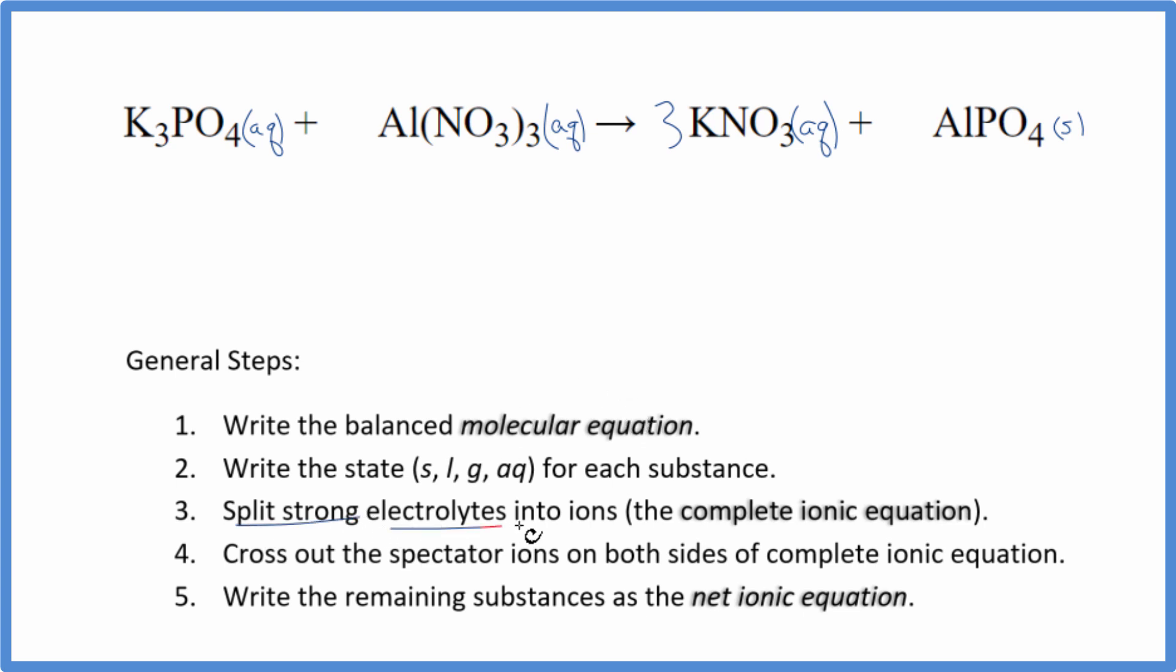Now we can split the strong electrolytes into their ions. And this will give us the complete ionic equation. On the periodic table, potassium is in group one. So that's going to be one plus. And then phosphate, the whole ion, is three minus. Good one to remember. Three potassium ions. And I won't write the states right now. Let's write that at the end. Plus our phosphate ion, that's the PO4, three minus. Then aluminum, that's three plus. The nitrate, the whole thing, one minus. Another good one to remember. So we have an aluminum ion, that Al, three plus. And then we have three nitrate ions. So three of those nitrate ions there.